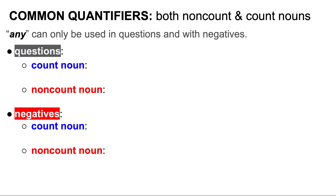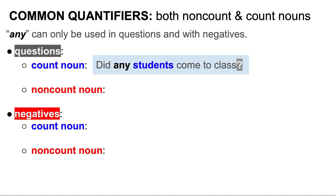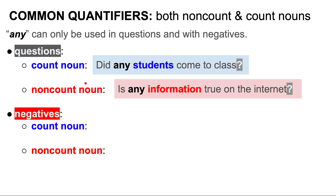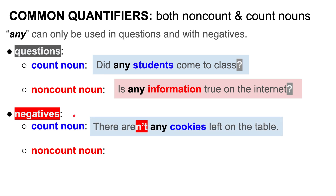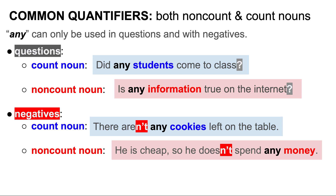Please note that any can only be used in questions and with negatives. In a question with a count noun: 'Did any students come to class?' In a question with a non-count noun: 'Is any information true on the internet?' With a negative and a count noun: 'There aren't any cookies left on the table.' With a negative and a non-count noun: 'He is cheap, so he doesn't spend any money.'